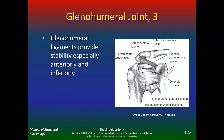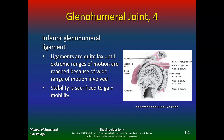The glenohumeral ligaments provide stability, especially anteriorly and inferiorly. If you get anterior or inferior subluxations, you rip through these ligaments, which are pretty common in overhead athletes. The inferior glenohumeral ligaments are quite lax until extreme ranges of motion are reached. Stability is sacrificed to gain mobility.